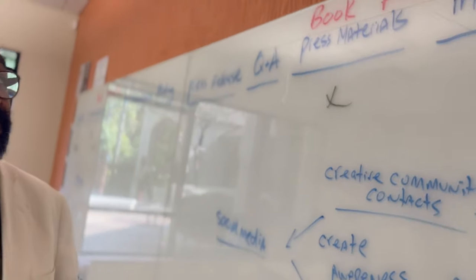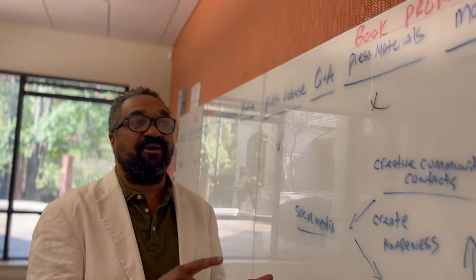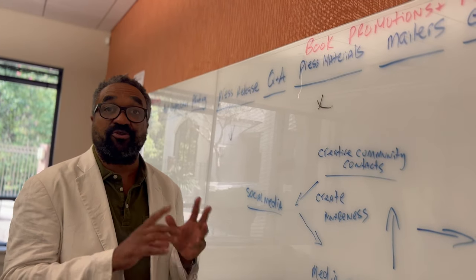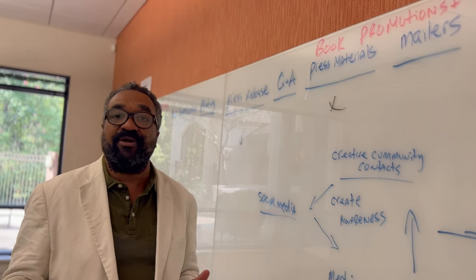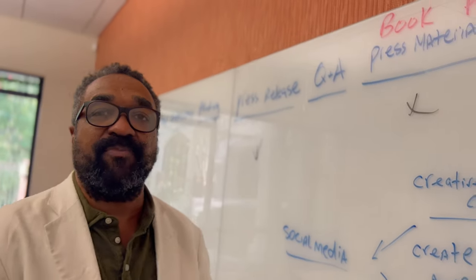Then we go to the actual press materials, which is, again, the front cover. This is like everything broken down and itemized now. So we're dealing with the front cover. We're dealing with the actual PDF of the book. A lot of people are going to want to see a PDF of the book. So these are all the press materials that you're sending out. Maybe a head shot of you or some kind of shot of you.